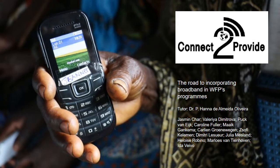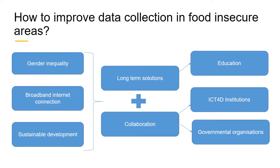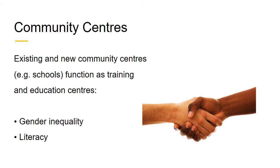The second team was Connect to Provide. In order to improve data collection from food insecure areas, Connect to Provide urges focus on solving issues of gender inequality, broadband internet access, and sustainable development, advising long-term solutions especially through education. Collaborations with ICT institutions and governmental organizations are highly recommended. Connect to Provide endorses the establishment or development of existing community centers, such as schools, functioning as training and education centers on gender inequality and literacy.